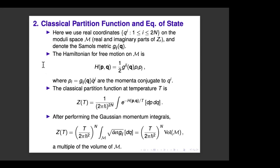Now for the classical partition function. We do classical statistical mechanics, introducing real coordinates — the real and imaginary parts of the vortex locations z_r — with Samols' metric g_{ij}. The Hamiltonian for free motion is quadratic in momenta on the phase space: it's the inverse metric times the momentum squared. The classical partition function is a standard formula from thermodynamics, with an overall scale related to Planck's constant even classically. You take the exponential of minus the quadratic Hamiltonian and integrate over phase space — this is the Boltzmann integral.